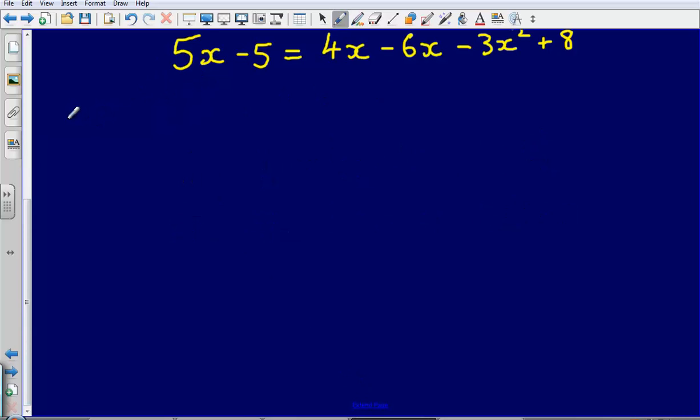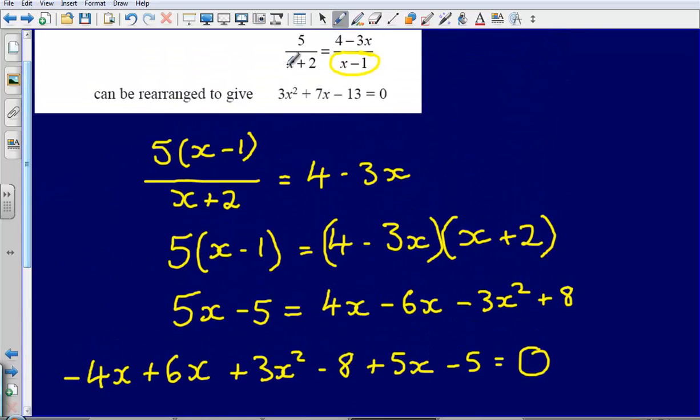So when I do that, what I end up with is negative 4x plus 6x plus 3x squared and then minus 8 plus 5x minus 5. And that is going to give me an expression that is equal to 0. Now next, all I'm going to have to do is tidy this up, and hopefully when I tidy this up it will give me this equation here.